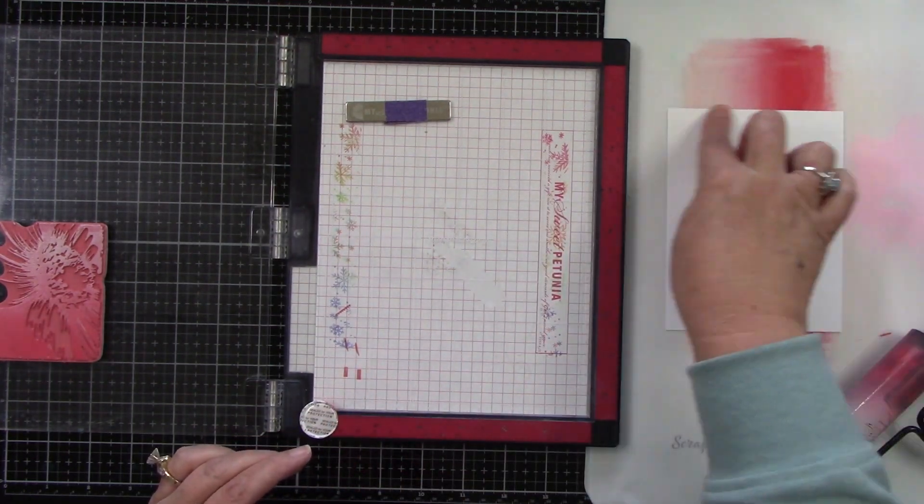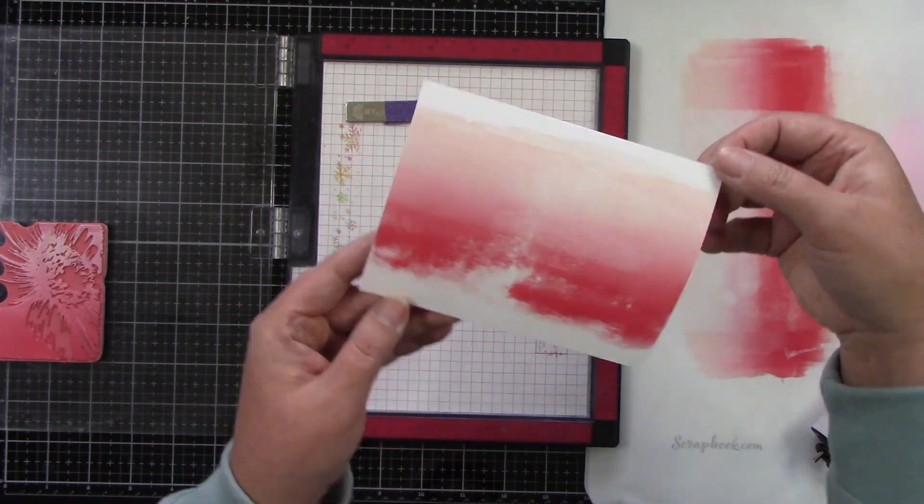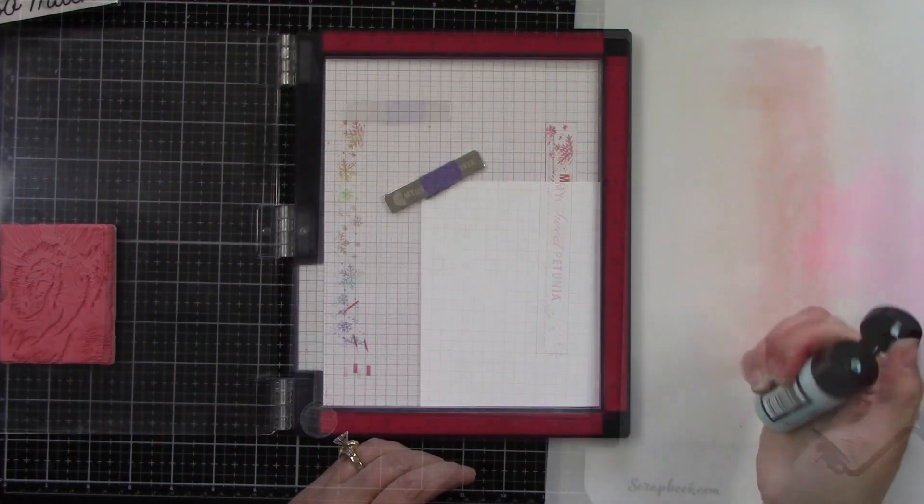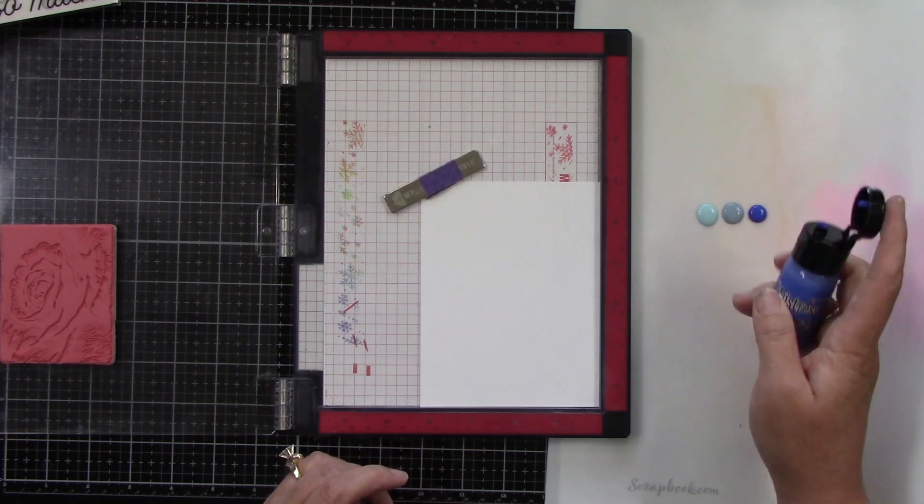Then I decided with the leftover ink right here that I'm going to make some other backgrounds. So I did that with the orange colors. I redid that off camera, inked it up and dipped my paper in it to get another background. And I will do the same thing with the blue here.